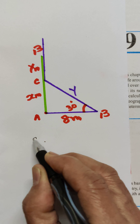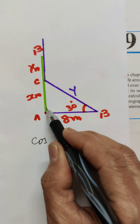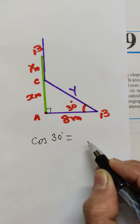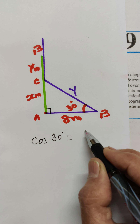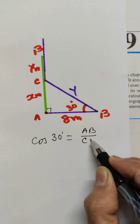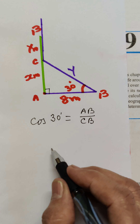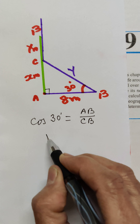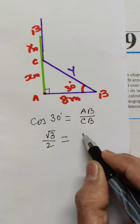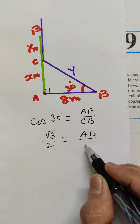First we shall use cos 30° in triangle CAB, which is right-angled at A. Cos 30° is equal to AB upon CB. The value of cos 30° is √3/2, so √3/2 = AB/CB.